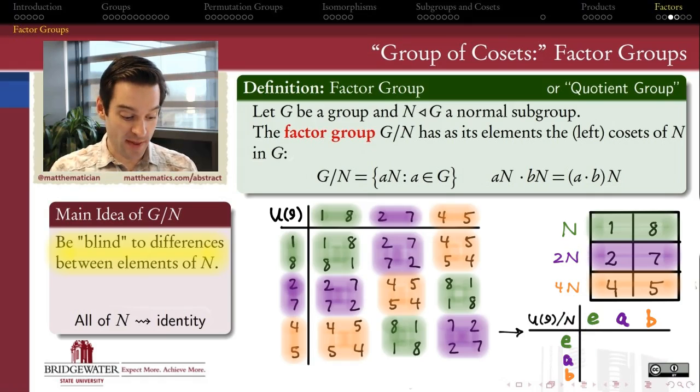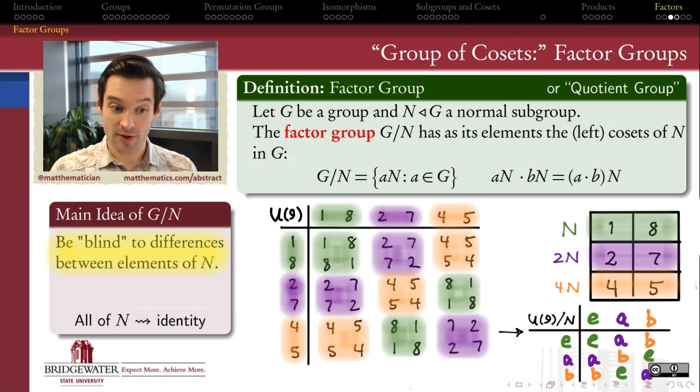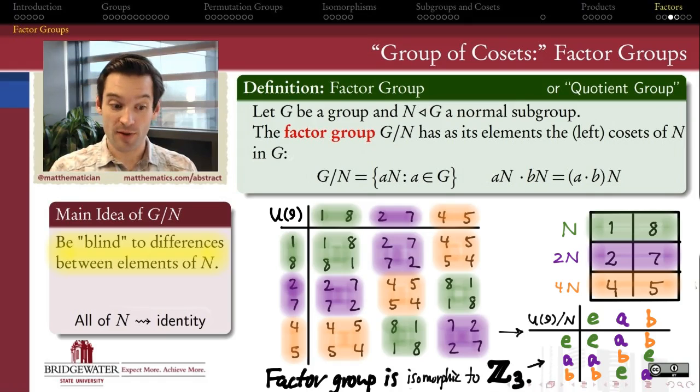And its algebra would just be that of having an element e, which is my identity, a and b, and whose Cayley table looks like this. You can figure out what all of the multiplications are just by looking at the multiplications here in this larger Cayley table. And that's a Cayley table that we know to be isomorphic to the Cayley table for the additive group Z mod 3.